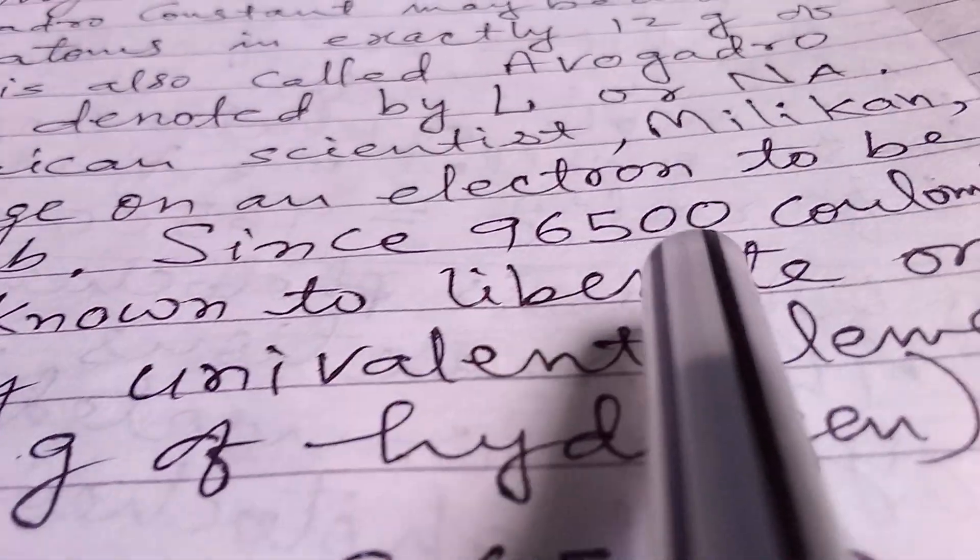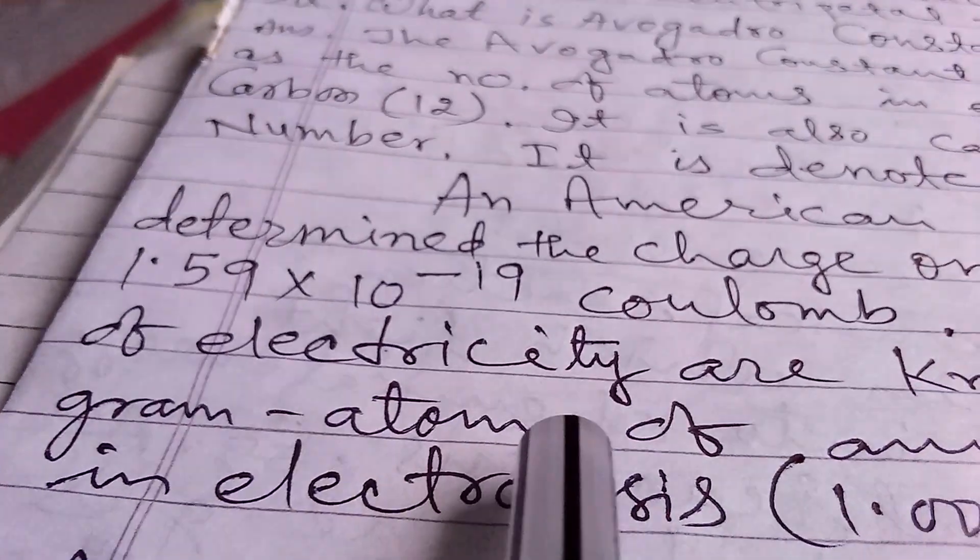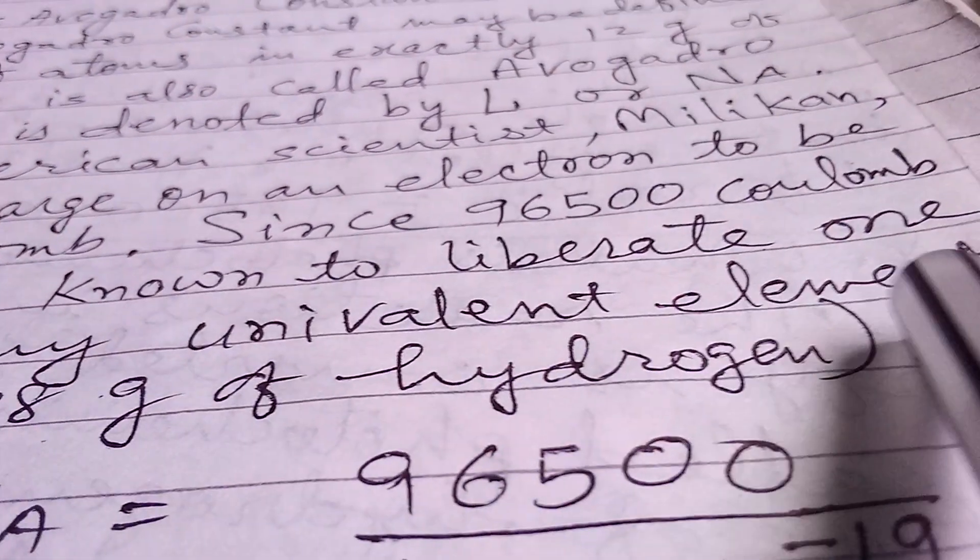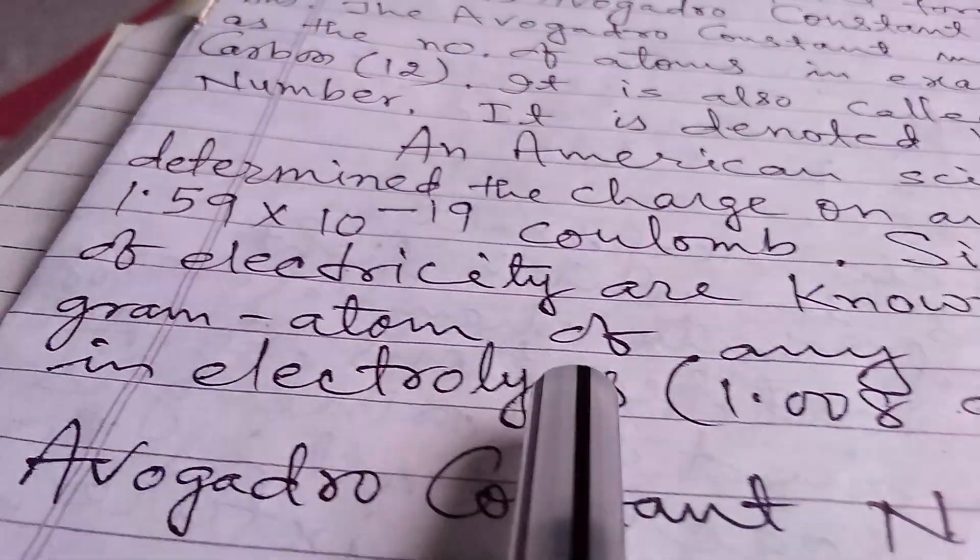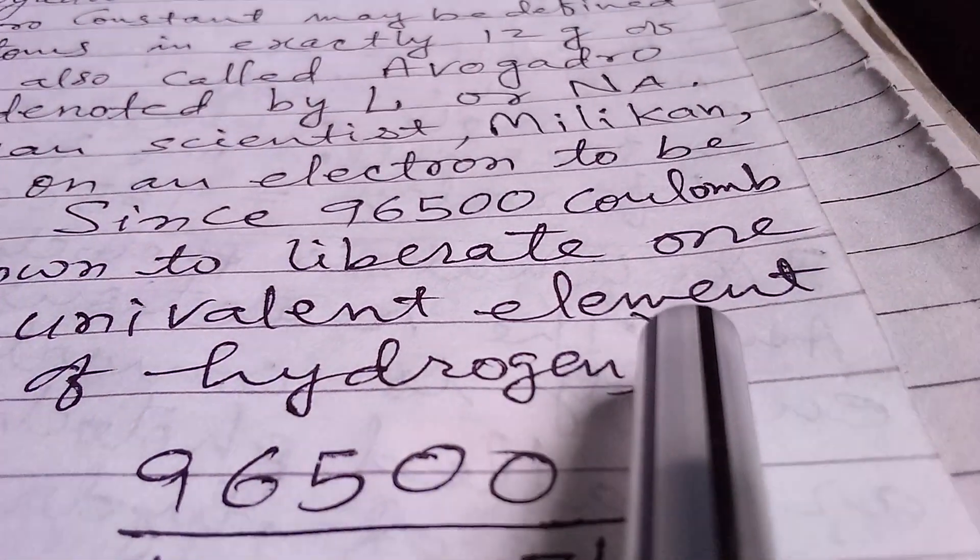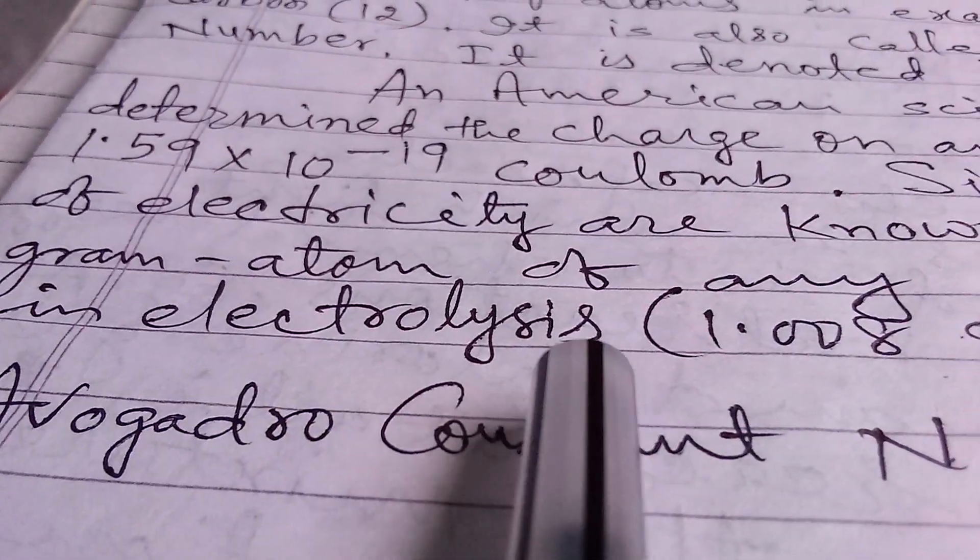Since 96,500 coulombs of electricity are known to liberate 1 gram atom of any univalent element in electrolysis.